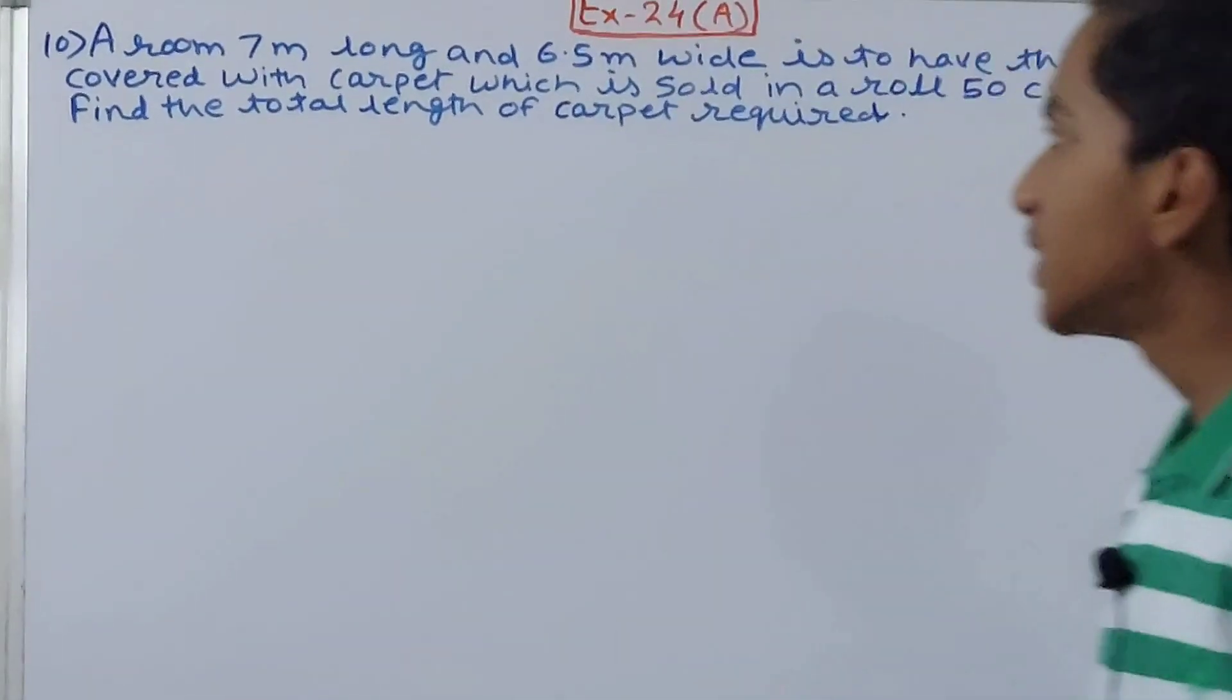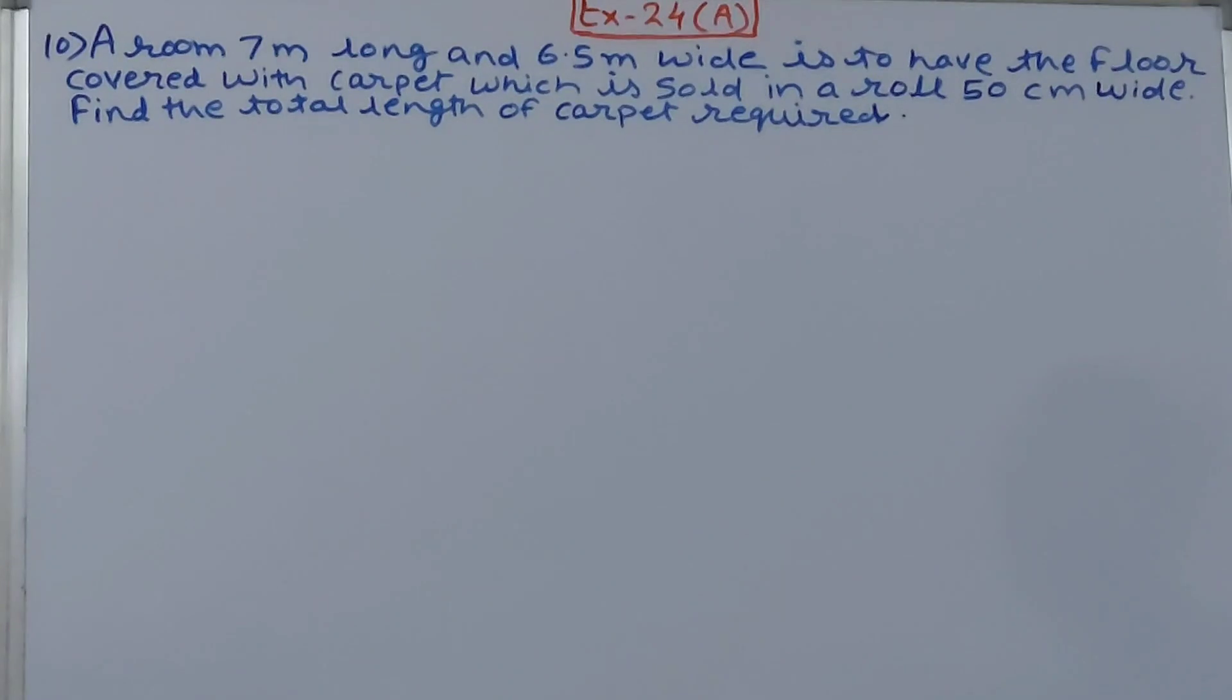The problem states: A room 7 meters long and 6.5 meters wide is to have the floor covered with carpet which is sold in a roll 50 centimeters wide. Find the total length of the carpet required.